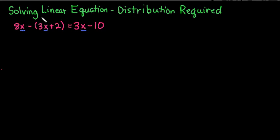For this one, the first place that we're going to start is we have a negative that's being applied to everything behind it, so we have to use the distributive property. We have to take this negative and apply it to everything in the parentheses behind it. So we really have 8x minus 3x, and we have to distribute this negative to the 2 as well, so we would have minus 2, and this gives us equals 3x minus 10.